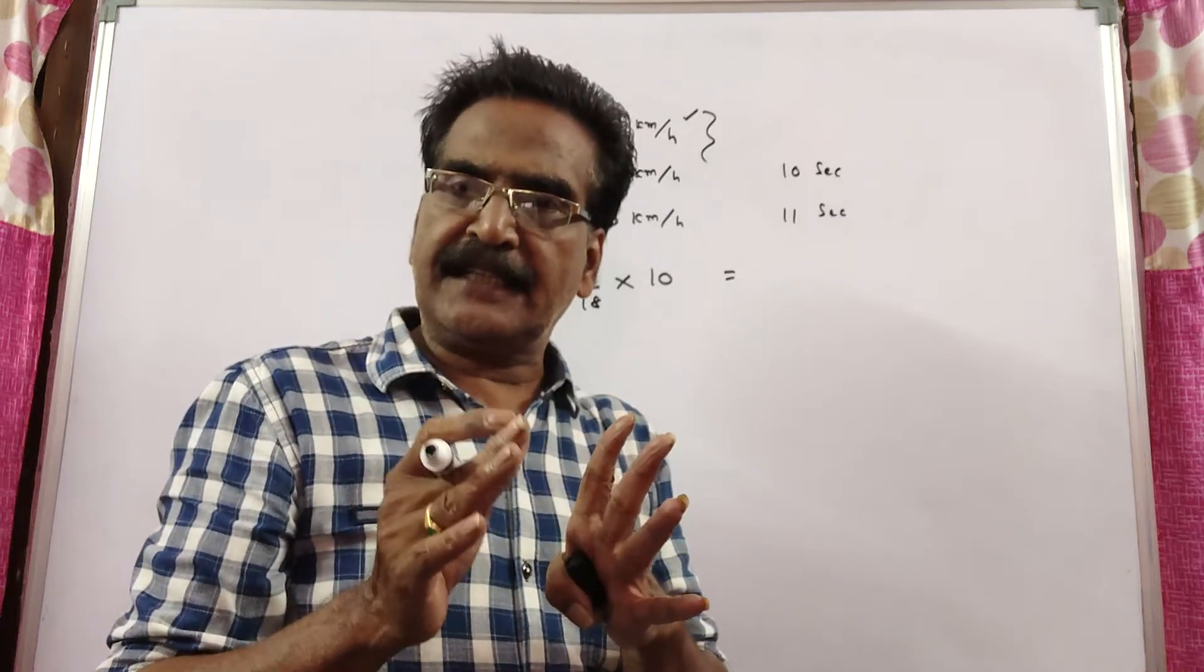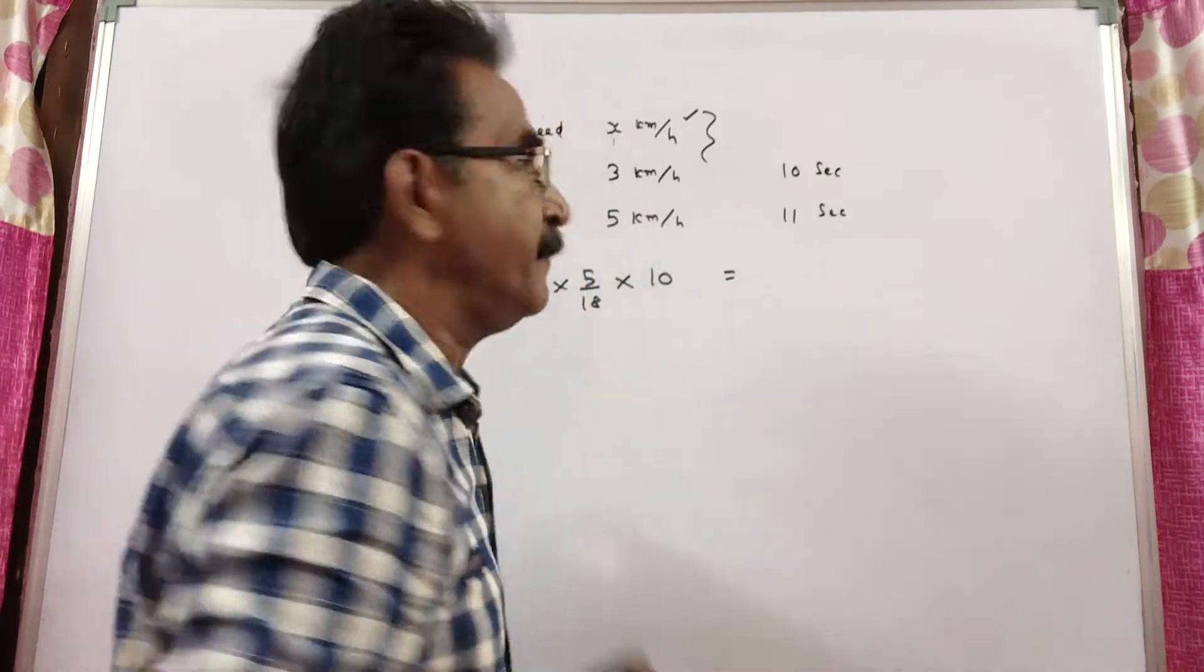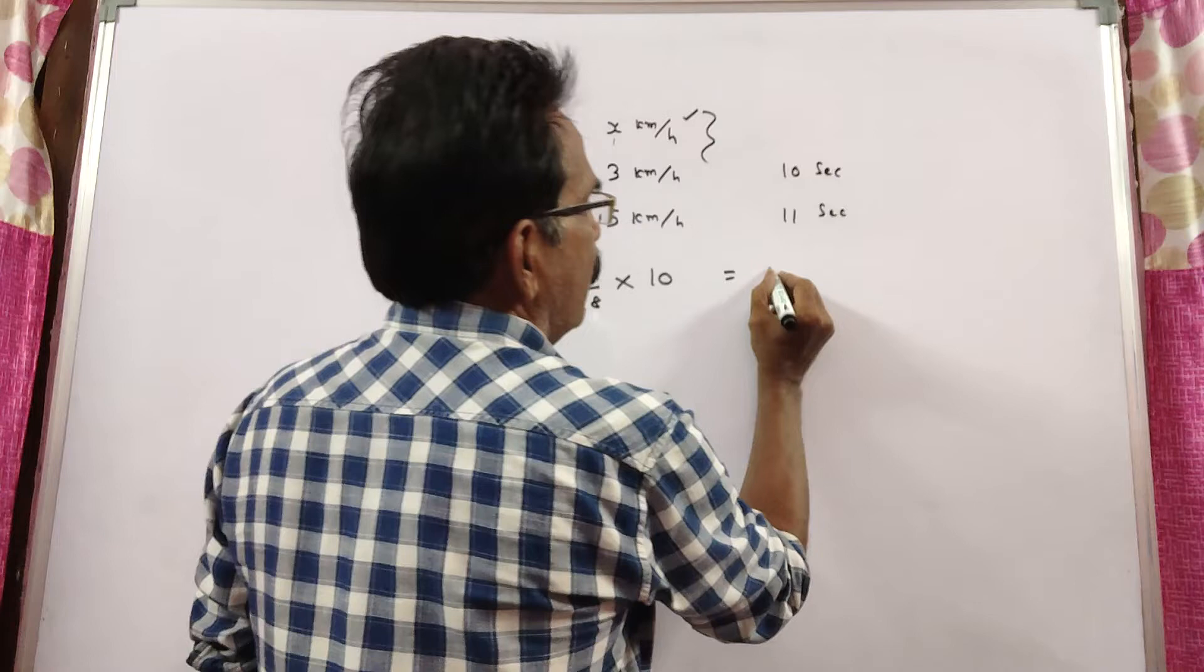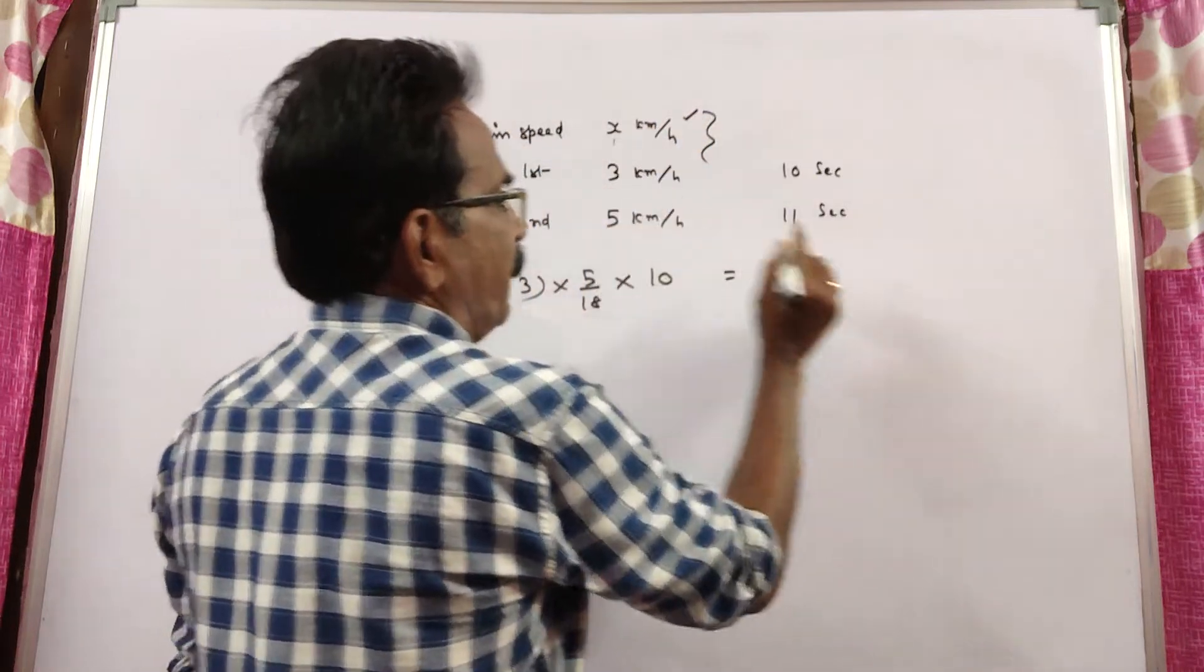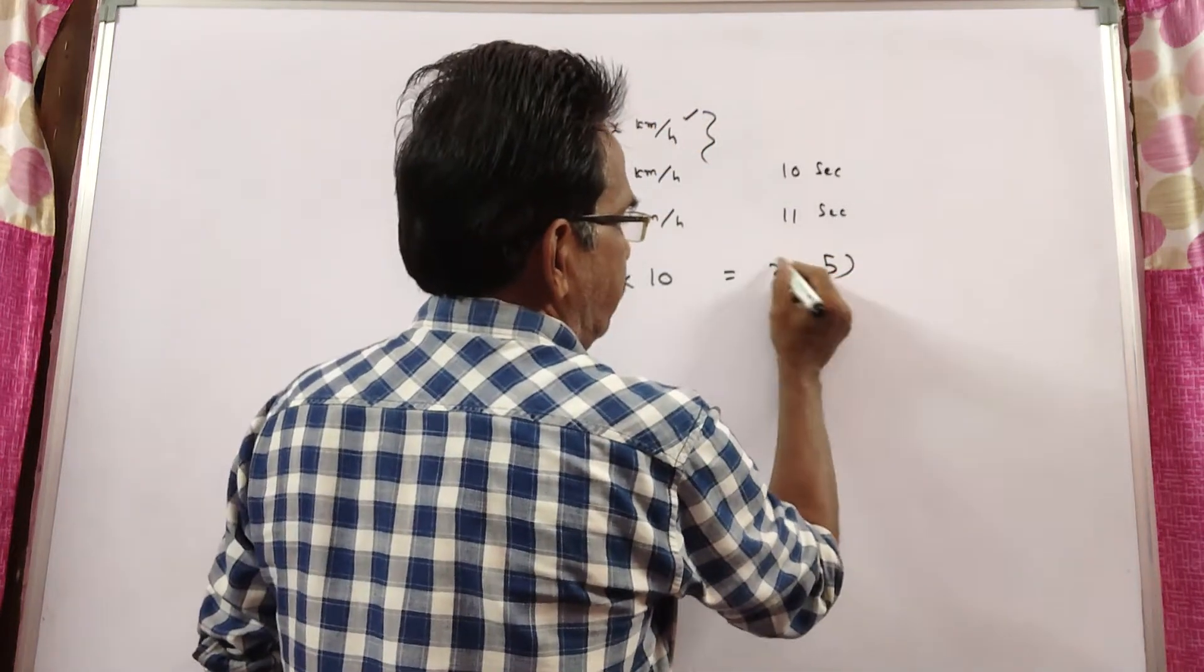Let us find the length of the train by crossing the second man. Velocity - x minus 5, relative velocity, same direction.